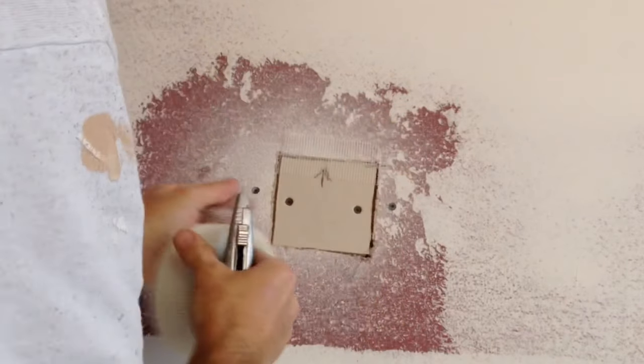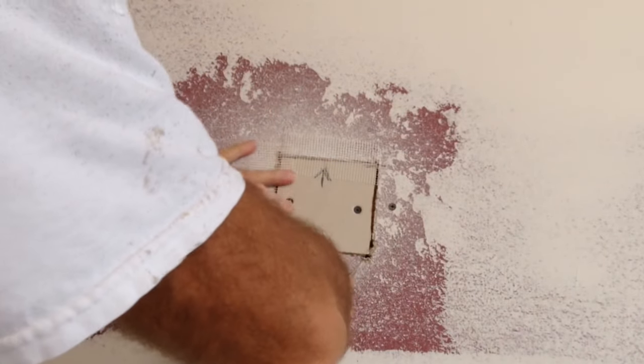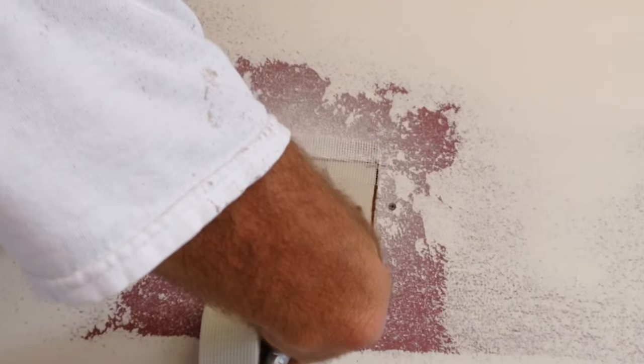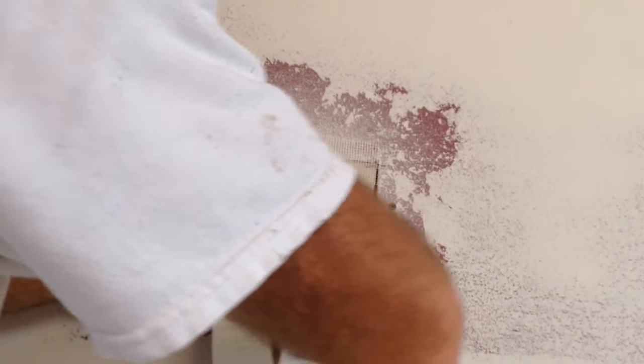Take your fiberglass mesh tape, cut it right at the seam basically and go around the perimeter on each joint.